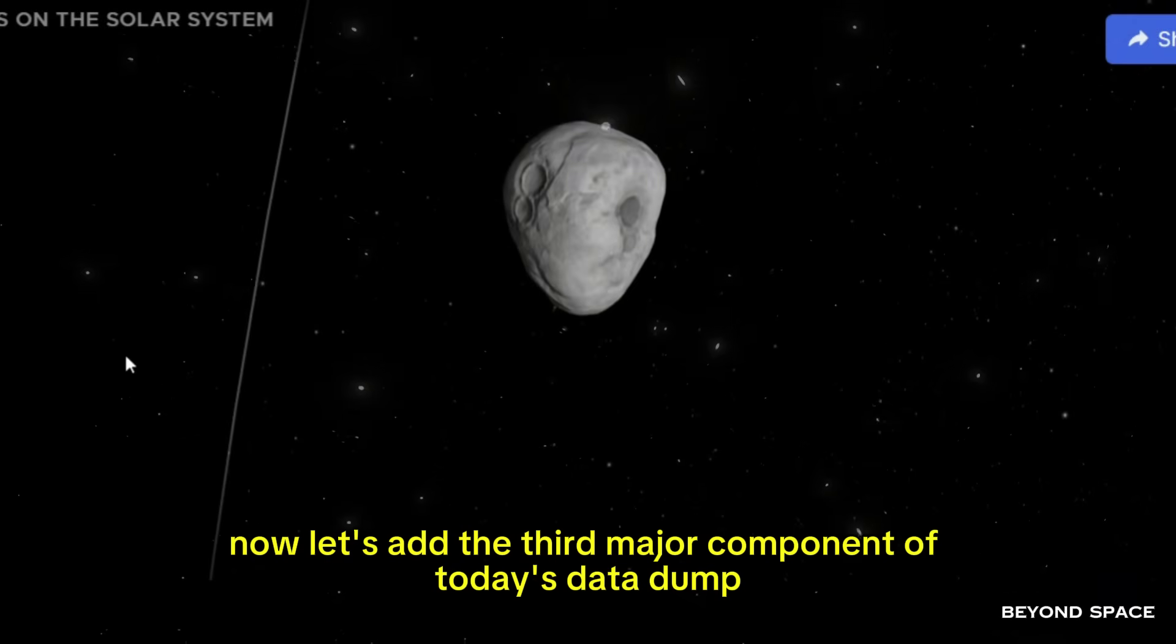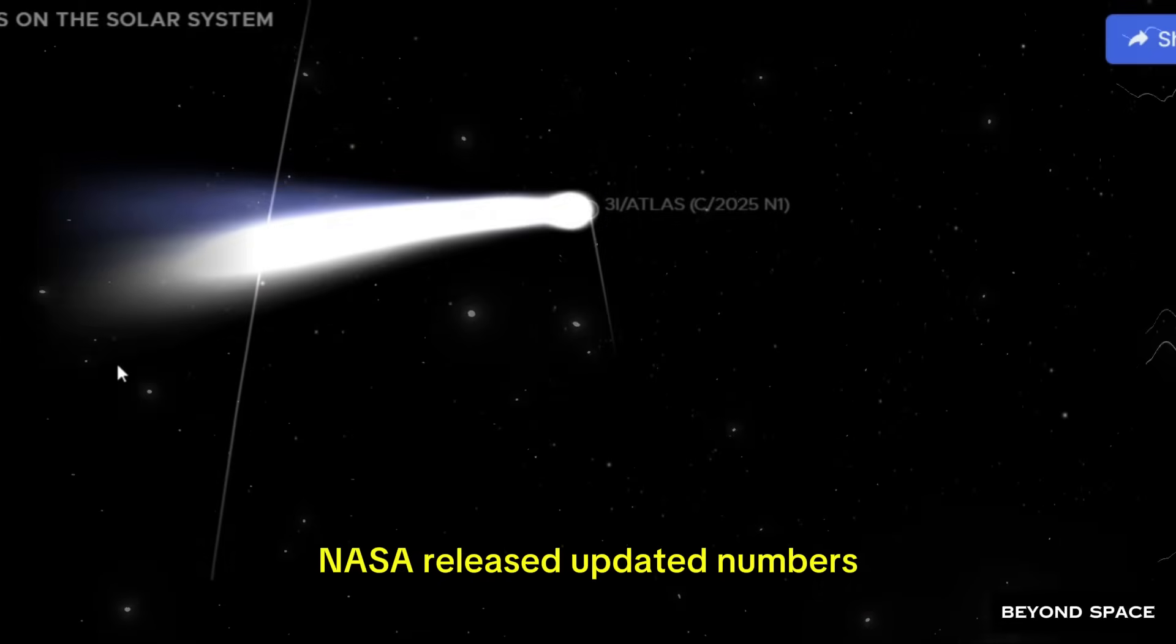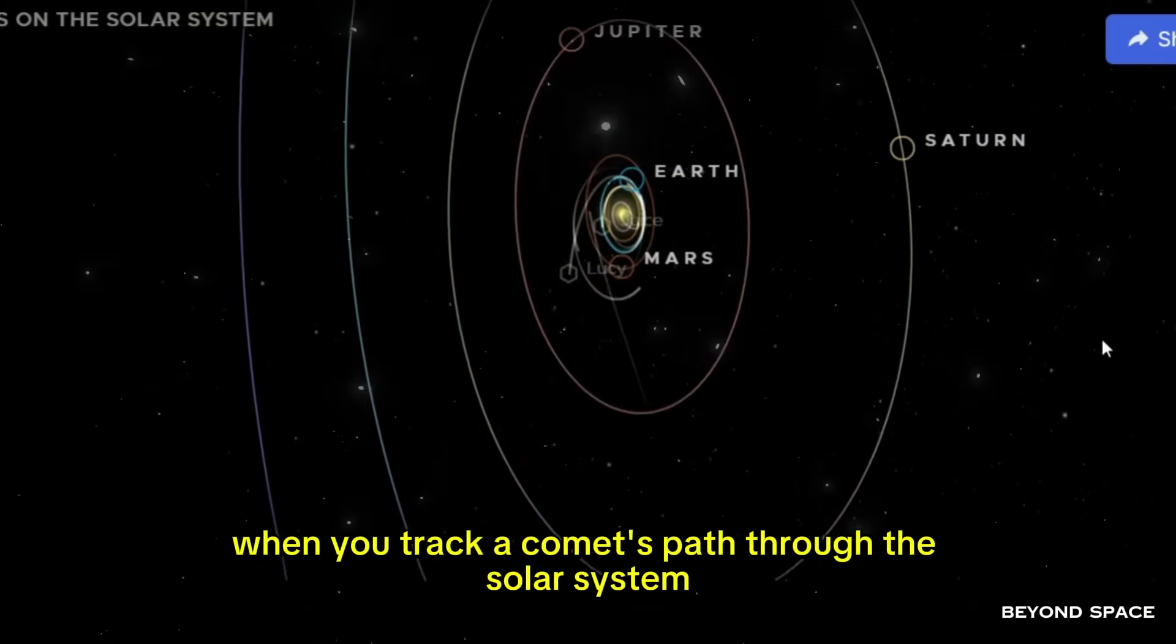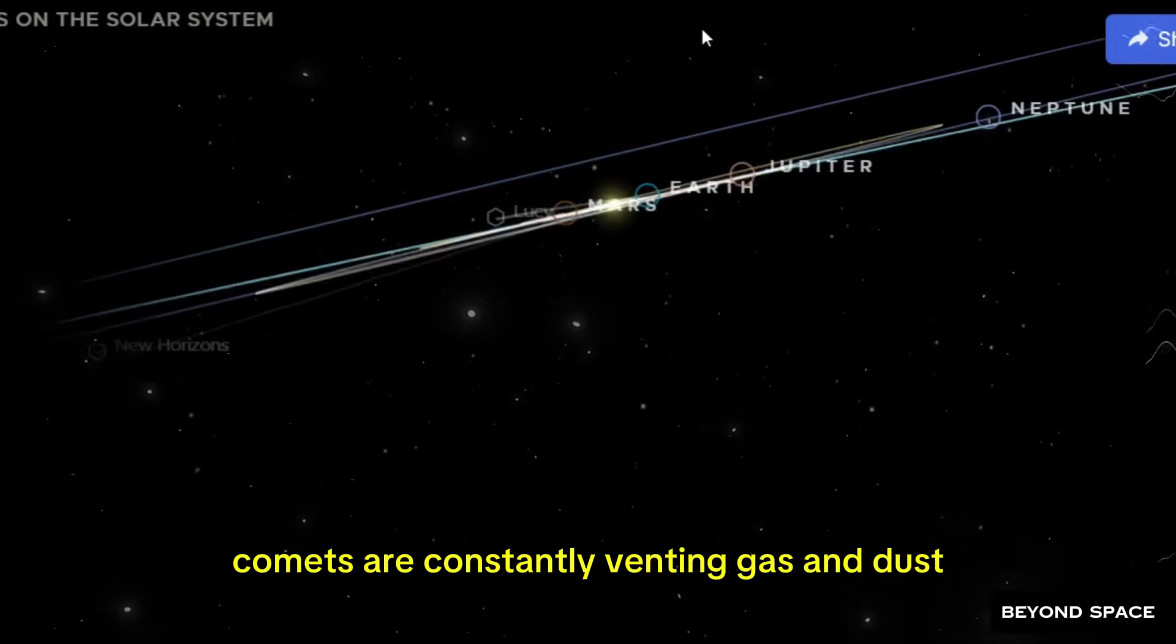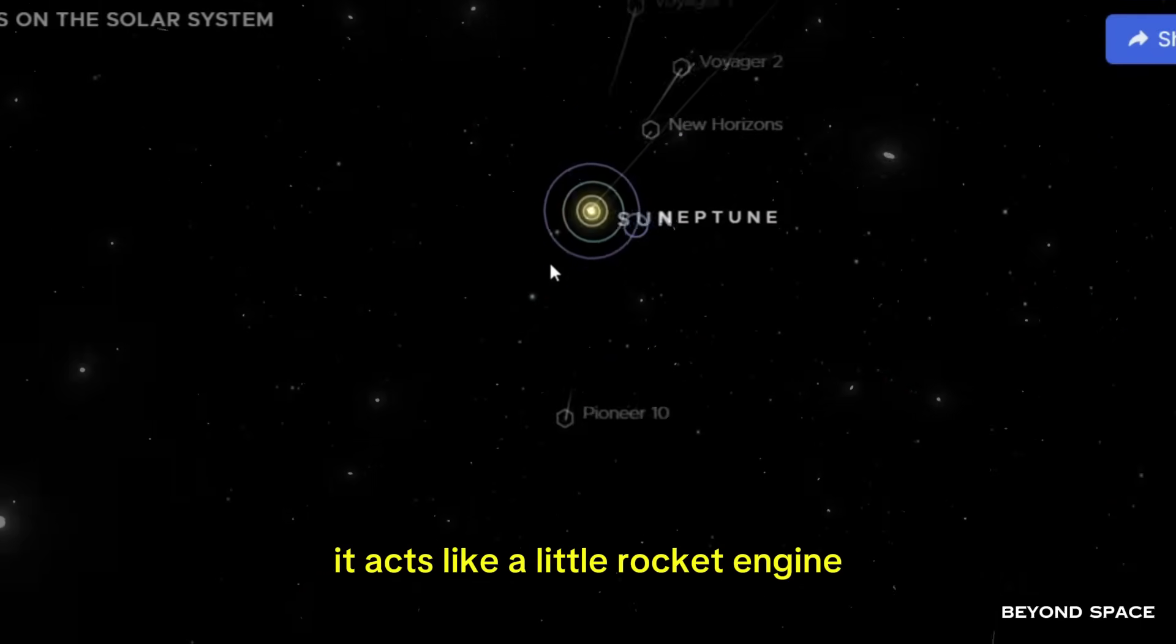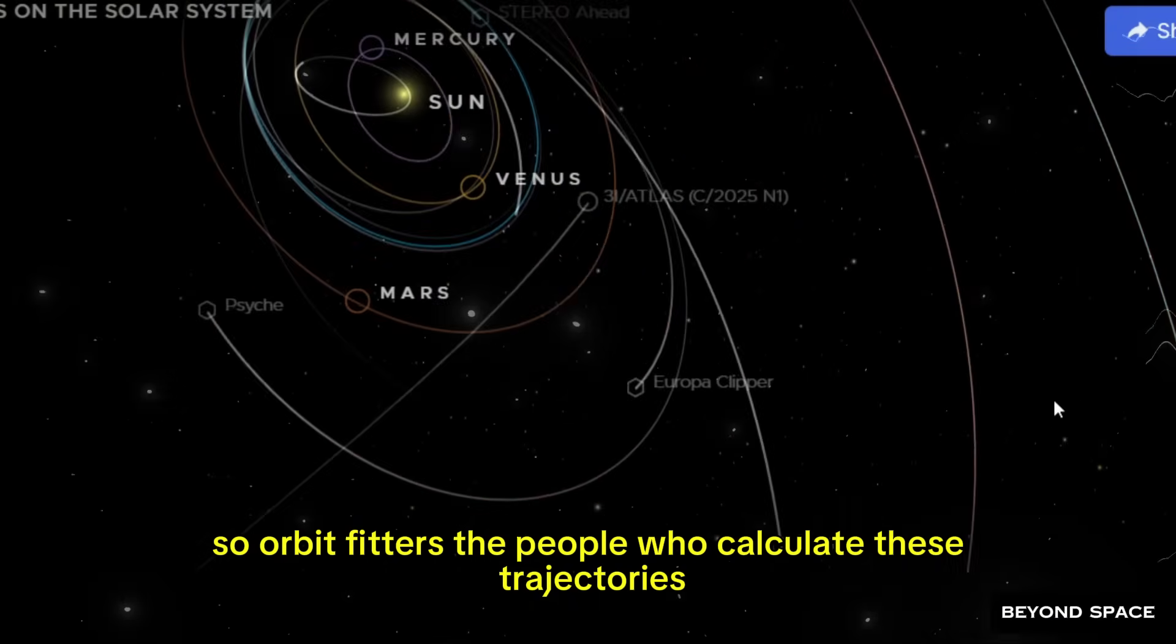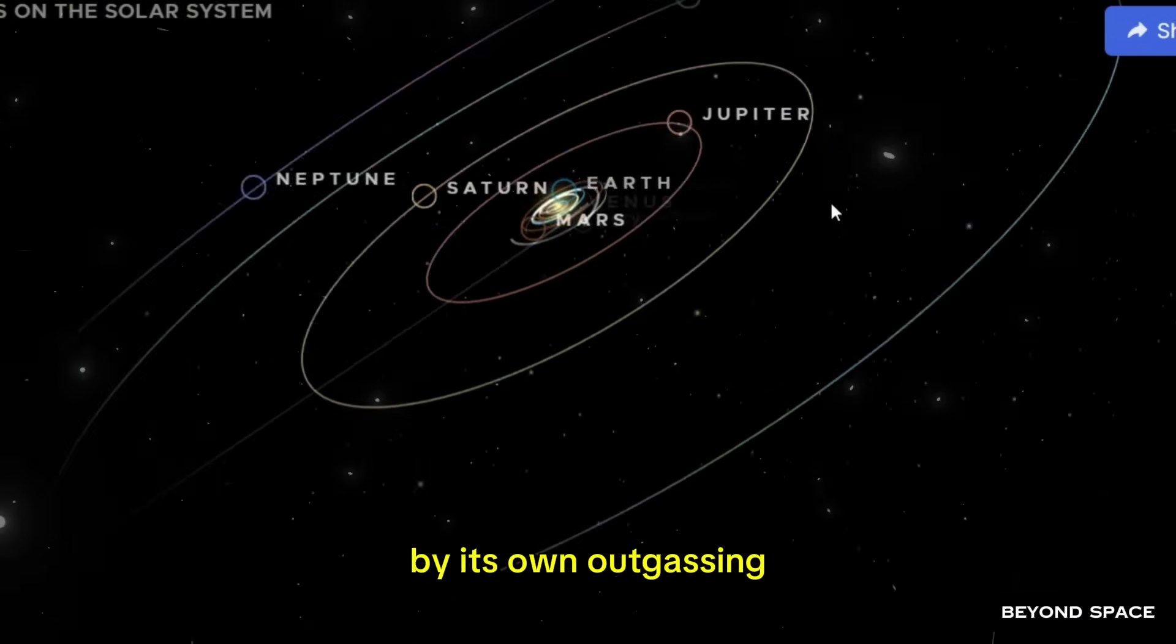Now let's add the third major component of today's data dump. NASA released updated numbers for what's called the non-gravitational solution for 3i Atlas's orbit. Let me explain what that means. When you track a comet's path through the solar system, you can't just use gravity alone to predict where it's going to go. Comets are constantly venting gas and dust. And when that material shoots off the surface, it acts like a little rocket engine. It pushes the comet, not by a huge amount, but enough that over time it changes the orbit in measurable ways. So orbit fitters, the people who calculate these trajectories, they have to account for that extra push. They have to figure out how much the comet is being shoved around by its own outgassing.